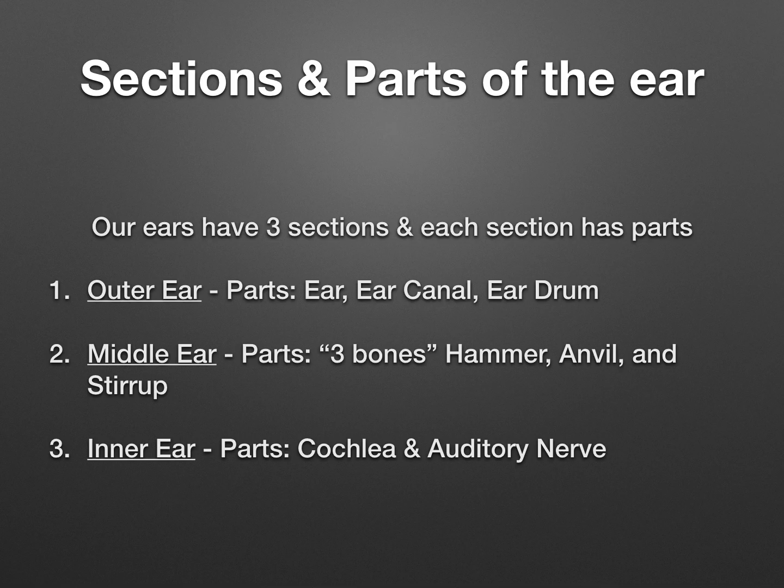The middle ear is made up of three bones — the smallest bones in your body. They are known as the hammer, anvil, and stirrup. The hammer is the furthest out, and the stirrup is closest to the inside of your head. I always remember the middle ear using 'H-A-S' — hammer, anvil, stirrup — it HAS three bones.